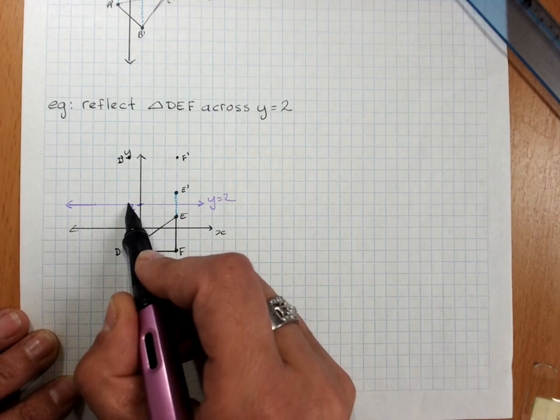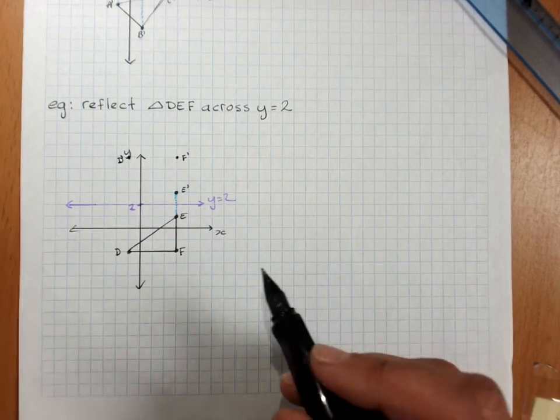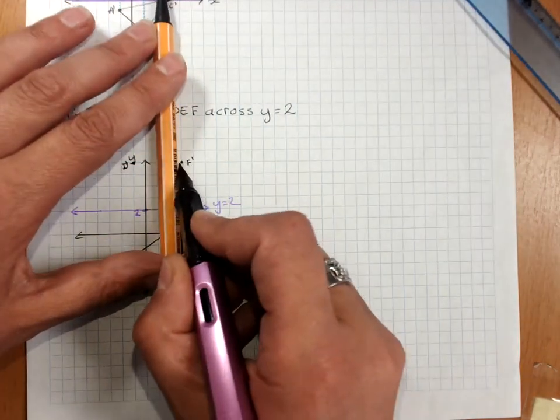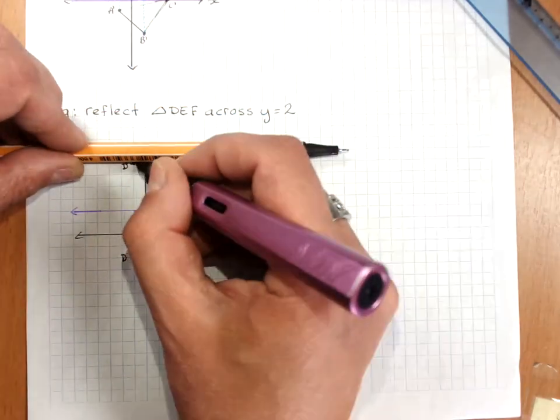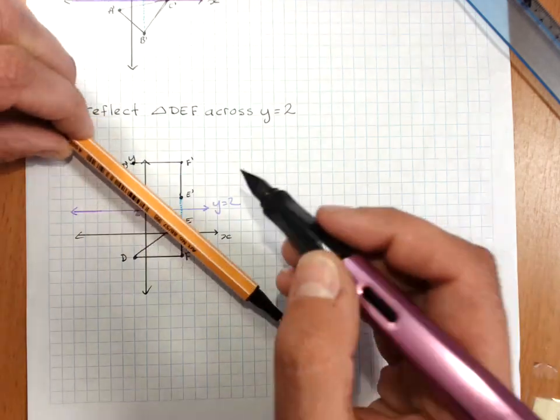Four grid squares to the mirror, four grid squares out the other side. Use a ruler or a straight edge to make your new triangle.